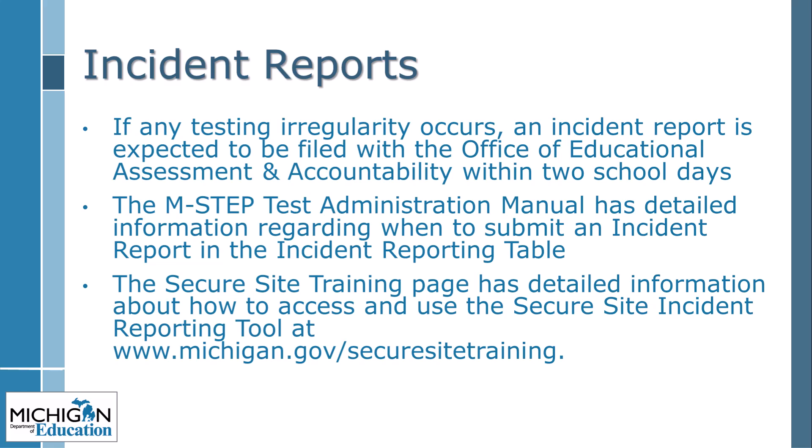Anytime a testing irregularity occurs, an incident report should be filed with the Office of Educational Assessment and Accountability within two school days. Detailed information regarding how to address an irregularity — including many possible scenarios and the most frequent irregularities — is provided in the M-STEP Test Administration Manual. The secure site also has detailed step-by-step instructions for submitting an incident report at www.michigan.gov/securesitetraining.